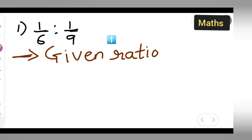Now this is a ratio which is given to you, that is 1 upon 6 is to 1 upon 9. Okay, this should come right in the middle.